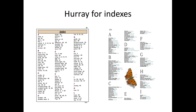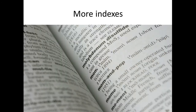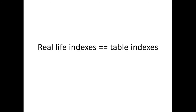Indexes, as you can see here, are used to help us quickly retrieve data. I'm sure you've seen indexes before in many books you've read. You look up a particular topic in the index and it redirects you to a page where you can find more information about that topic. This is another form of index — a dictionary, where an index is created on the word. Since dictionaries are in order, it helps you find information a whole lot quicker. It's always good to remember that real-life indexes are the same as table indexes — they allow quick data retrieval.